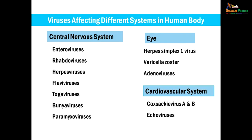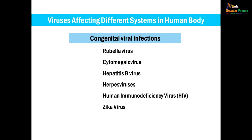Viruses that affect the central nervous system include enteroviruses and rhabdoviruses. Adenoviruses and herpes simplex virus can infect the conjunctiva and eye tissues. Coxsackieviruses and echoviruses cause lesions in the cardiovascular system. There are many viruses transmitted via the placenta or acquired during birth, causing congenital viral infections — important ones being rubella, cytomegalovirus, HIV, and Zika virus. This is how viruses can be classified on the basis of pathogenicity.